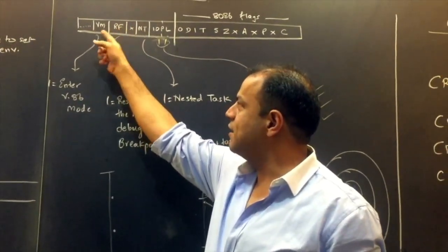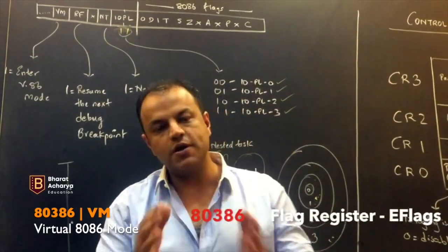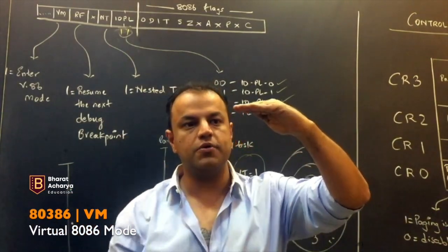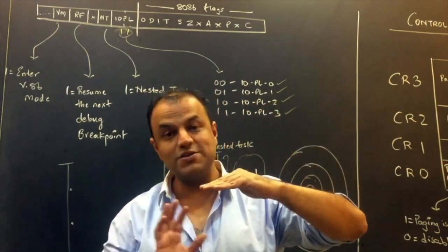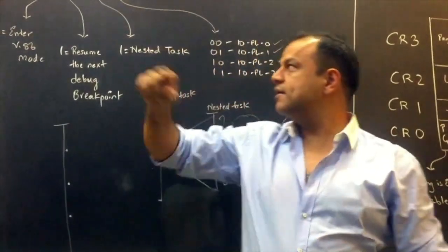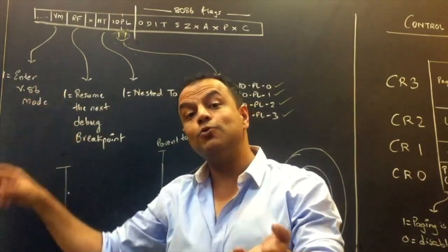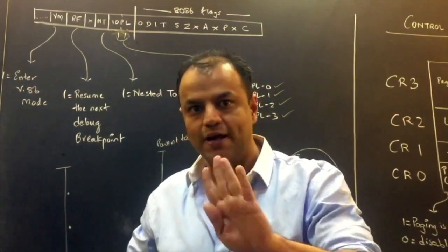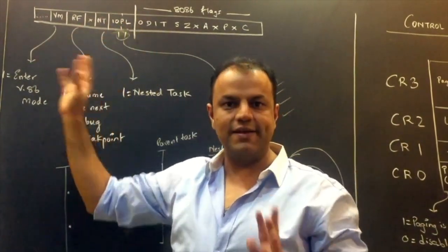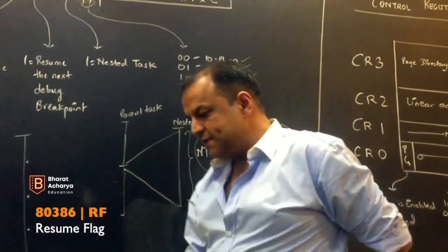Next there is a don't-care bit, then VM — Virtual 86 mode. You always start in real mode, because you have to set up the environment to enter protected mode. Once in protected mode, you cannot go back to real mode. But if you want to run an 8086-based program, you can enter Virtual 86 mode by setting this bit to 1. Setting it back to 0 returns you to protected mode — never back to real mode. These flags are available only in protected mode.